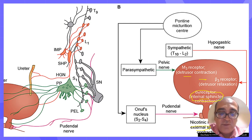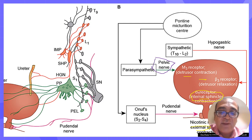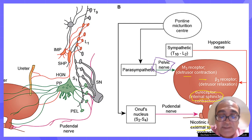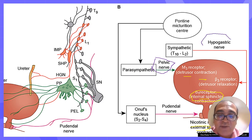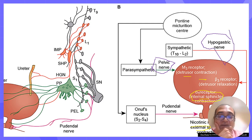Regarding nerve supply, there are three nerves. First is the pelvic nerve — the parasympathetic nerve — which carries both afferent and efferent signals. The parasympathetic is the rest-and-digest response, so it helps in emptying the bladder when one has eaten and is resting. Then there is the sympathetic nerve, which helps in filling of the bladder and is concerned with the fight-and-flight response.